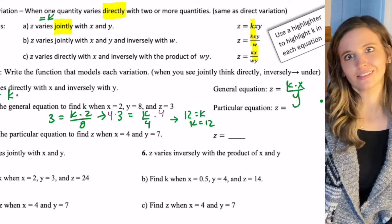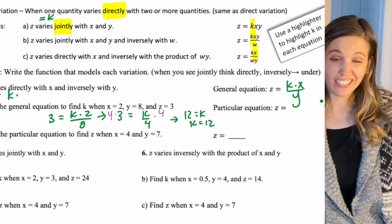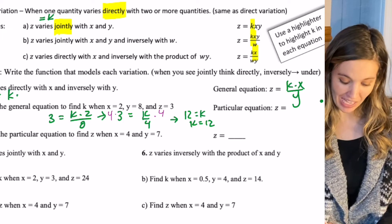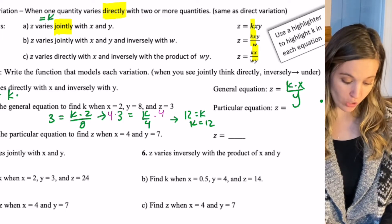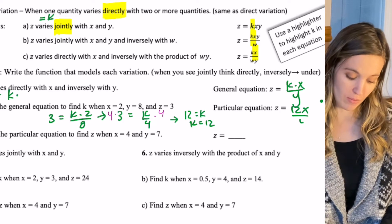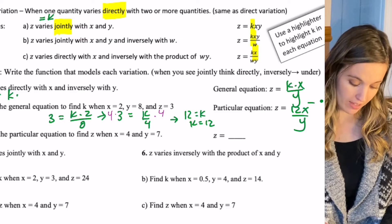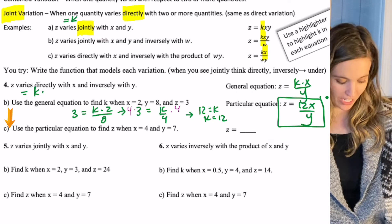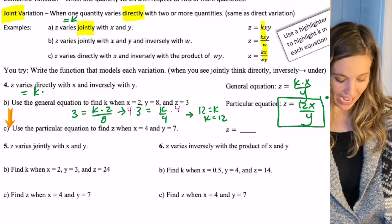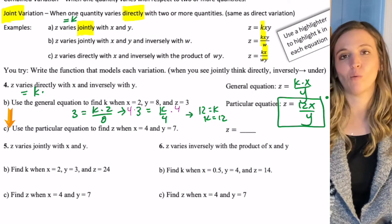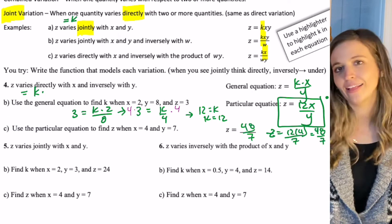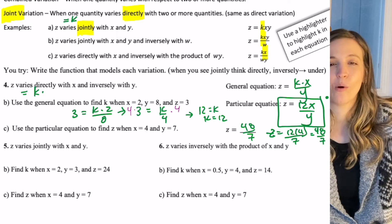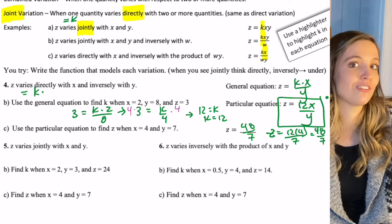Solving for k gives k equals 12. So the particular equation is z equals 12x divided by y. Using this equation to find z when x equals 4 and y equals 7, z ends up being 48 sevenths.